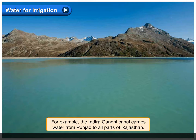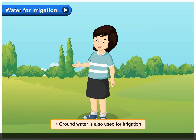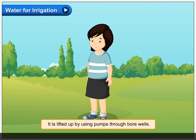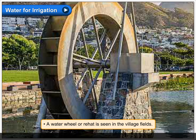For example, the Indira Gandhi canal carries water from Punjab to all parts of Rajasthan. Groundwater is also used for irrigation. It is lifted up by using pumps through bore wells. A water wheel or rehat is seen in the village fields.